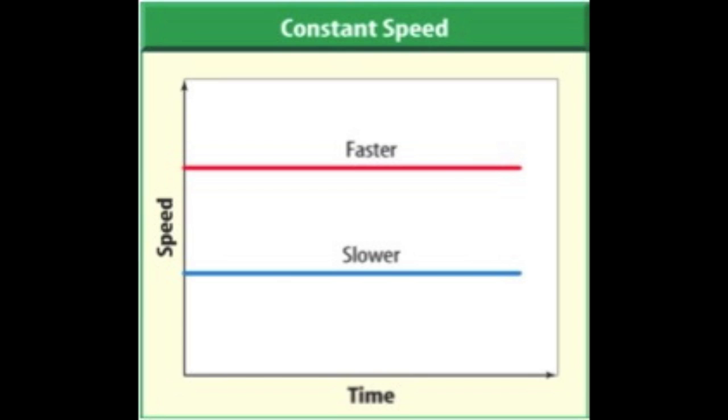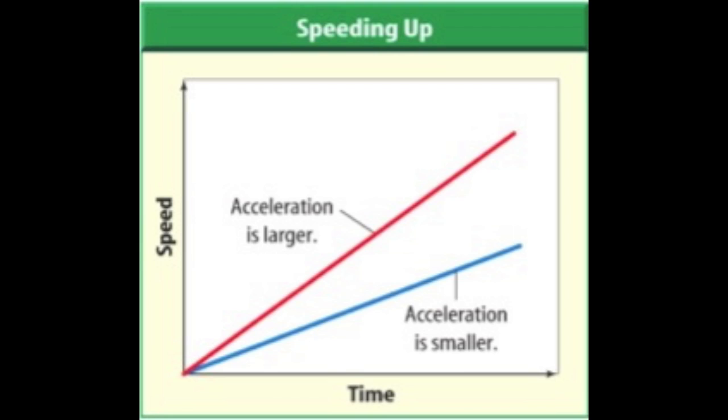So continuing with the speed-time graphs, you'll see here that as time is passing again, let's say I have a red car and a blue car and they are slanted towards the right. This means that these objects are speeding up because as time passes, the speed is increasing. Now the steeper the line, the faster the car is speeding up or the object. And so in this case, the red car would be speeding up at a faster rate than the blue car. And you'll remember that we can call this acceleration, so the red car would be accelerating at a faster rate than the blue car.